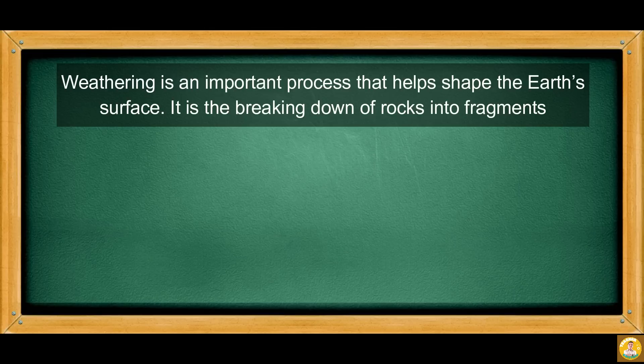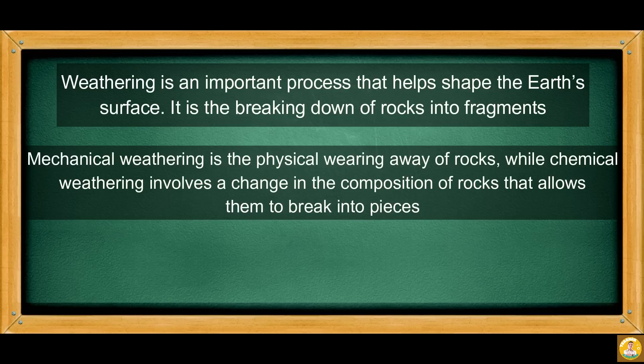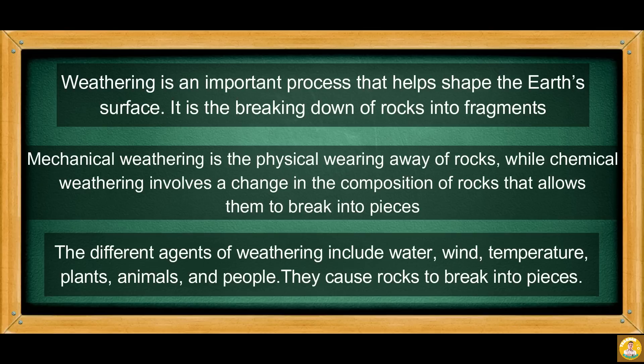Now, let's recap our lesson for today. Weathering is an important process that helps shape the Earth's surface. It is the breaking down of rocks into fragments. Mechanical weathering is the physical wearing away of rocks, while chemical weathering involves a change in the composition of rocks that allows them to break into pieces. The different agents of weathering include water, wind, temperature, plants, animals, and people. They cause rocks to break into pieces.